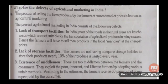Third defect: Existence of middlemen. There are many middlemen between farmers and consumers who exploit poor, innocent, and illiterate farmers by adopting various unfair methods. According to estimates, farmers receive only 60 paise out of every rupee paid by the consumers, meaning middlemen take 40 paise, and farmers don't even receive the minimum price for their food grains.